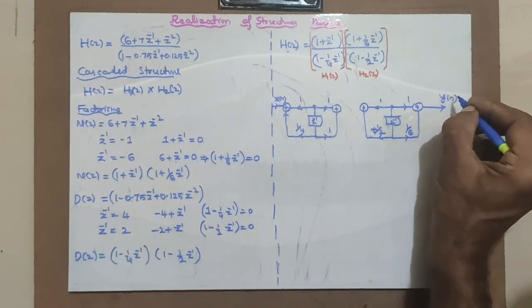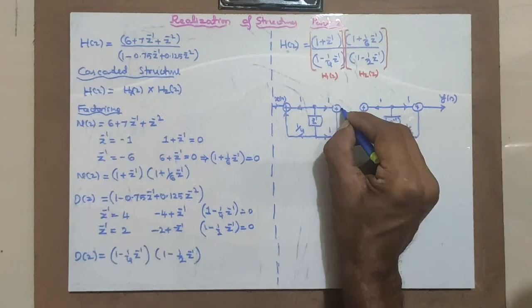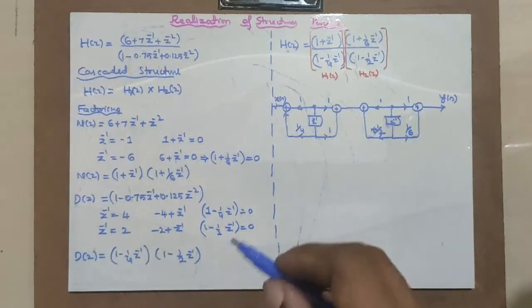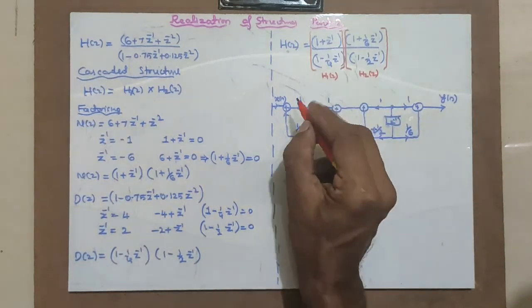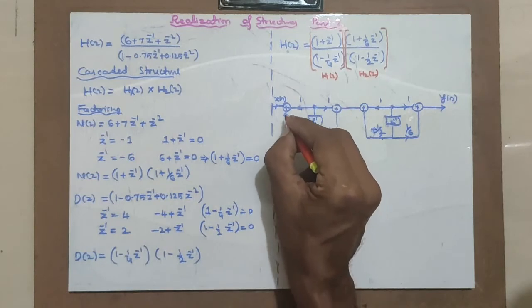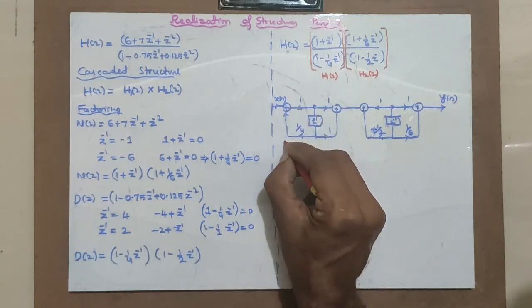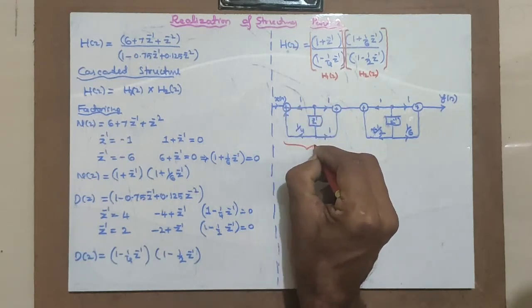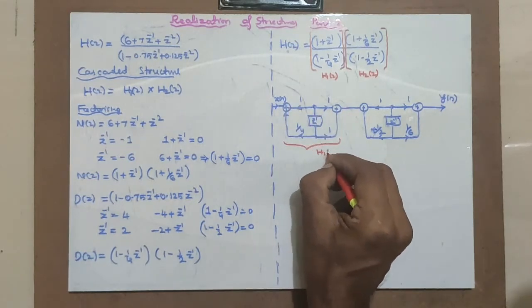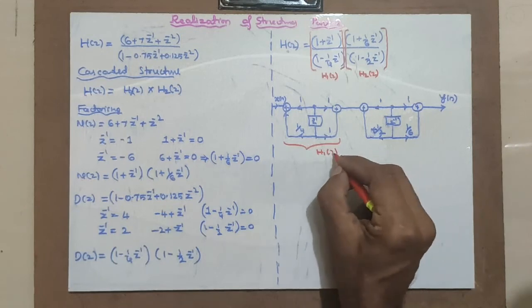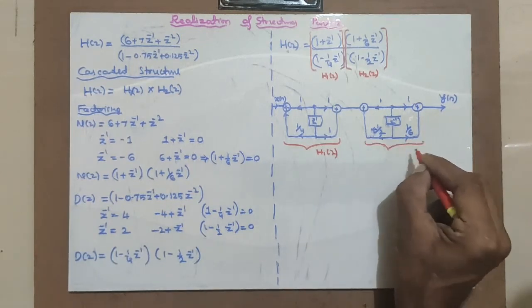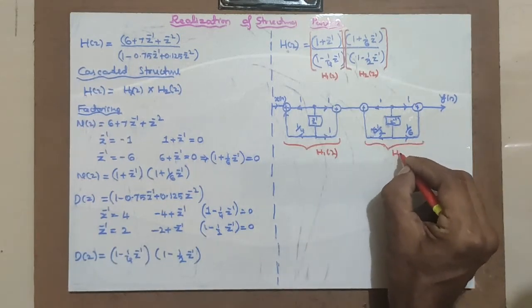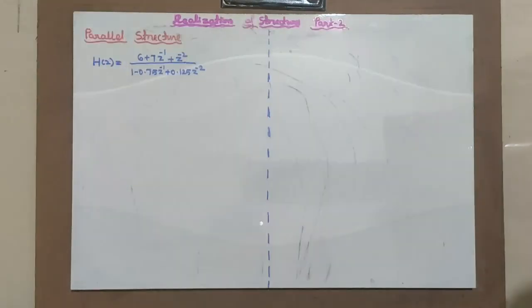Joining the two structures, H1(Z) feeds into H2(Z) in series. This is the complete cascaded structure implementation of H1(Z) and H2(Z).